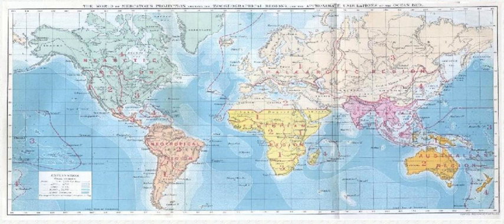Biogeography is an integrative field of inquiry that unites concepts and information from ecology, evolutionary biology, geology, and physical geography. Modern biogeographic research combines information and ideas from many fields, from the physiological and ecological constraints on organismal dispersal to geological and climatological phenomena operating at global spatial scales and evolutionary time frames. The short-term interactions within a habitat and species of organisms describe the ecological application of biogeography. Historical biogeography describes the long-term, evolutionary periods of time for broader classifications of organisms.